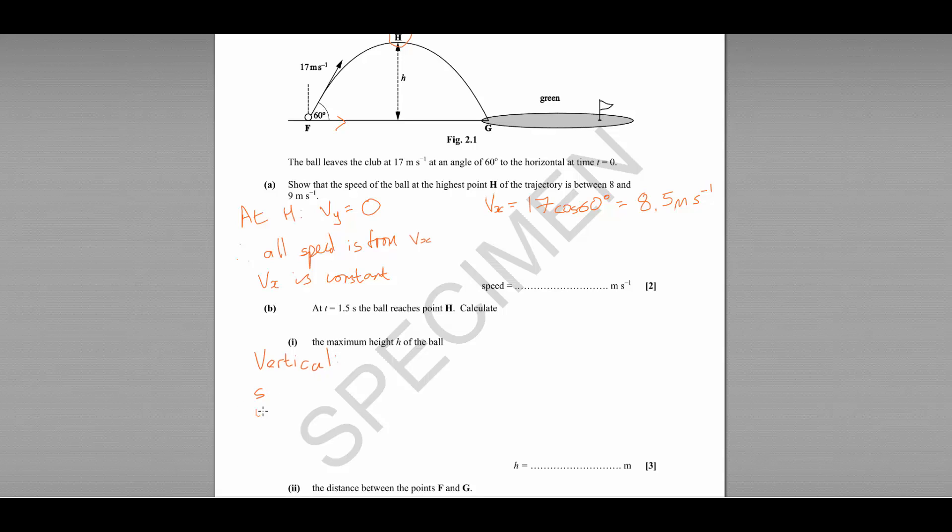So we can use SUVAT, where S is what we're trying to find out. That's the vertical displacement. U, we know to be 17 sine 60 degrees. V, we know to be zero. This is the highest point of the journey. A is the acceleration due to gravity. That's minus 9.81 metres per second squared. And T, the question has told us, is at 1.5 seconds.